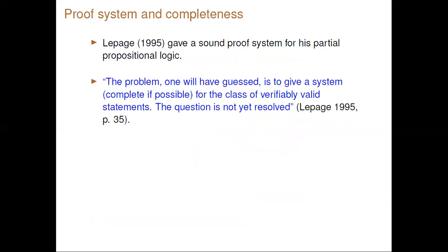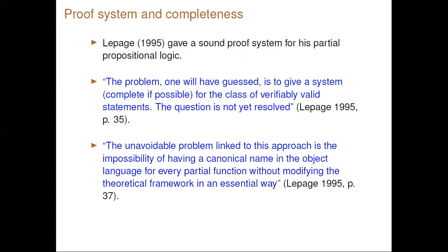Considering the proof system and completeness, Lepage already gave a sound proof system for his partial propositional logic. In 1995 he explicitly stated that the problem is to give a complete system for the class of valid statements, and the problem at that moment was that it was impossible to have a canonical name in the object language for a partial function without modifying the theoretical framework in an essential way. We ask why it is not possible to give a canonical name — why Lepage said in 1995 it was not possible to prove the nameability theorem for this logic.